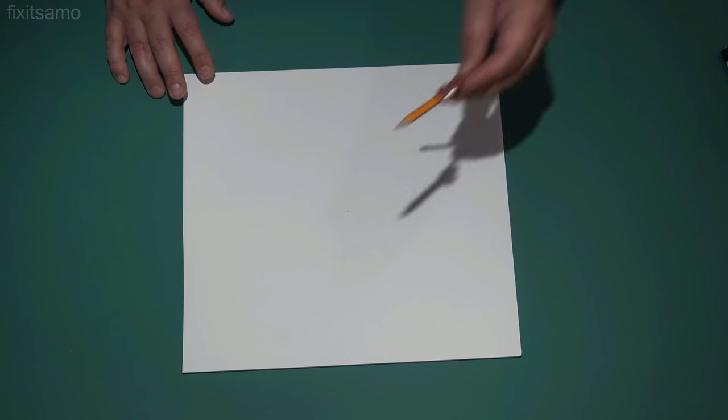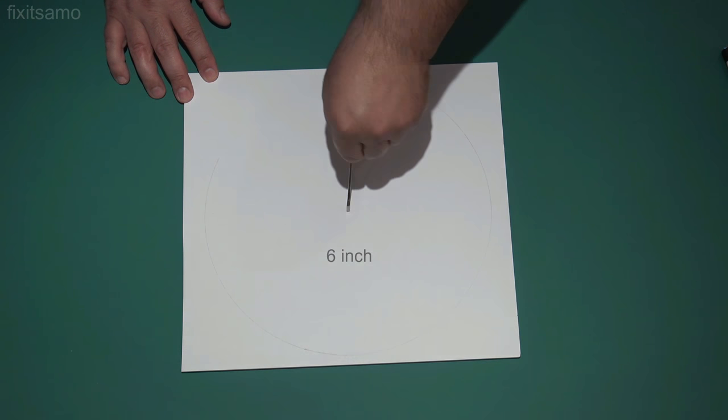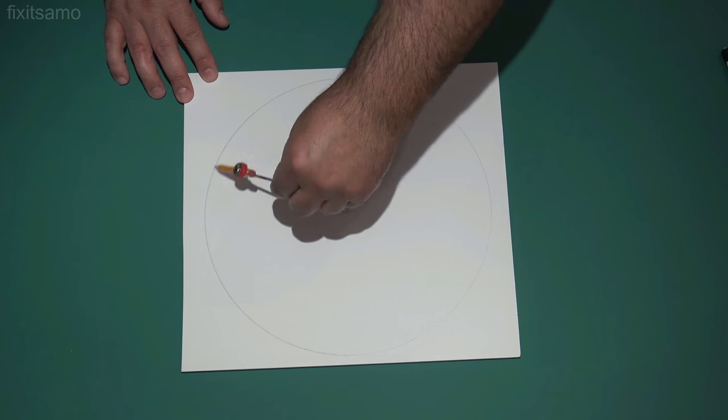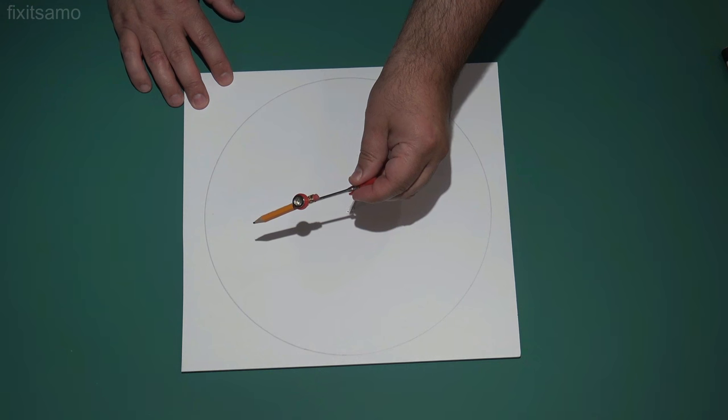And now we're going to make the second circle. So again it's going to be six inch. And now the inner circle is going to be four and a half inch.